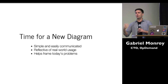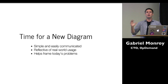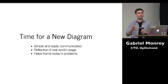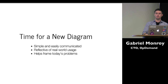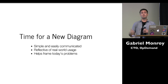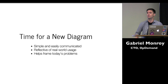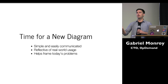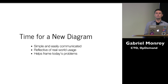For this talk, I thought it's time to build a new diagram. Let's try and simplify this, cut out the unnecessary parts, and focus on what we need and where I think we have a hope of getting some agreement in terms of building composable systems. The diagram needs to be simple and easily communicated. It also needs to be reflective of real-world usage — correct to some degree. And most importantly, it needs to help frame today's problems. If the diagram doesn't frame today's problems, it's probably not very useful. And ideally, if we can, it can help provide some guidance for what we might need to be doing as a community going forward.